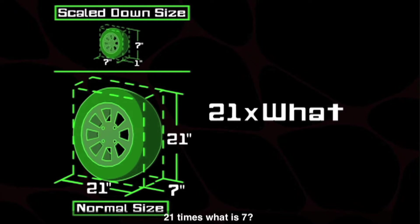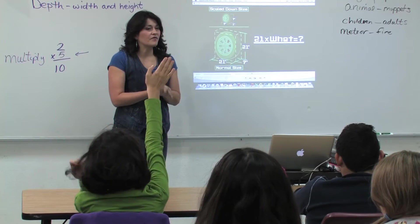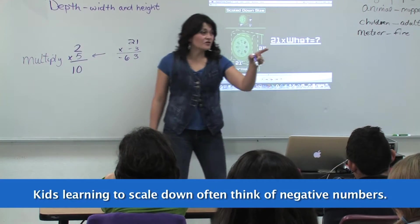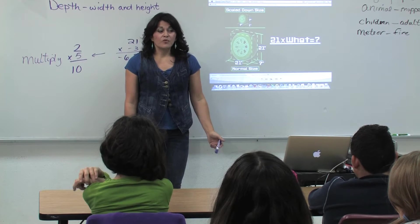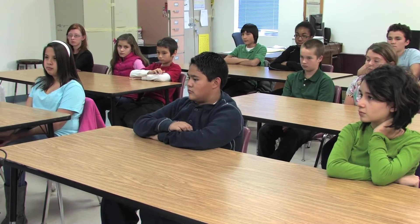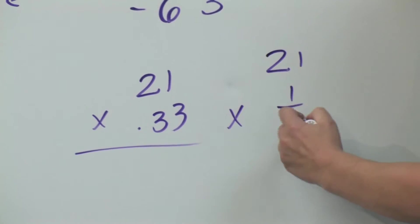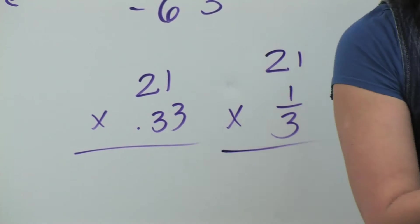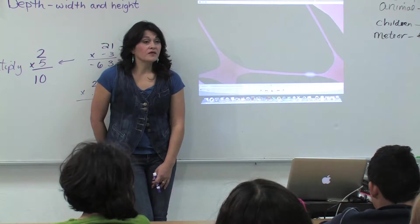Twenty-one times what is seven? I'm going to pause it right here. Sydney: Negative three. Twenty-one times negative three — let's stop and think. That gives negative sixty-three, so that's not going to work. You're on the right track knowing it wasn't three, but it's not negative three. Another student: Point three-three. Where did you get point three-three? Does anybody know the fraction form of thirty-three hundredths? Students: One-third. So I could do twenty-one times one-third. One-third is the scale factor. In the first one they scaled up, in the second one they scaled down.